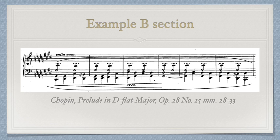The B section changes dramatically — well, it is Romanticism and Chopin after all. From Db major, we go to the parallel minor, but since Db minor is not an actual key possibility in notation, Chopin moves us to C-sharp minor, so we have an enharmonic there. This section is sort of dark and brooding, with the melody moving to the bass voice. Have a listen.